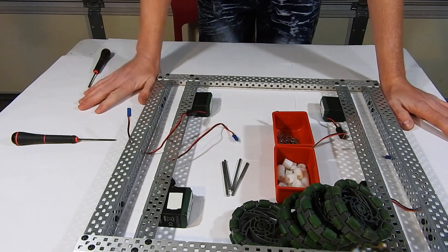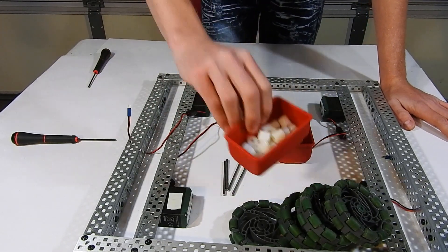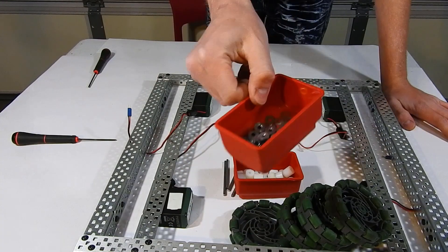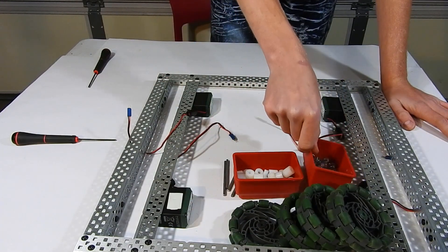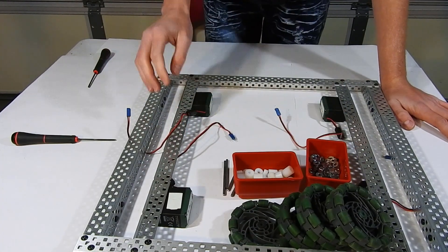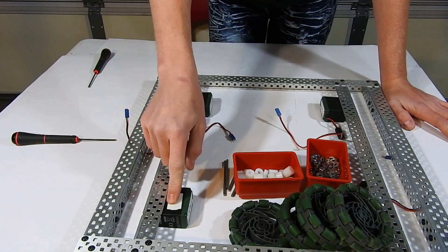You're now going to take your wheels, axles, spacers, and collars, and you're going to attach each wheel to the frame and into the motor.